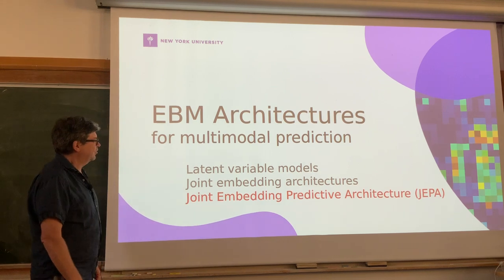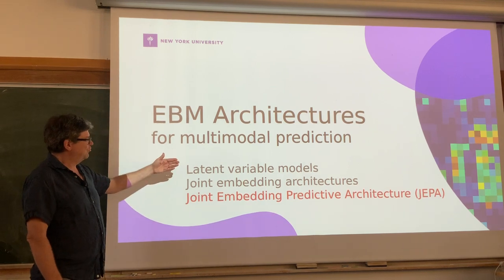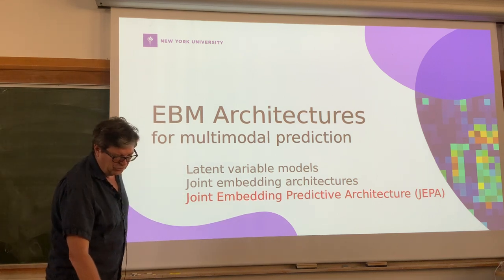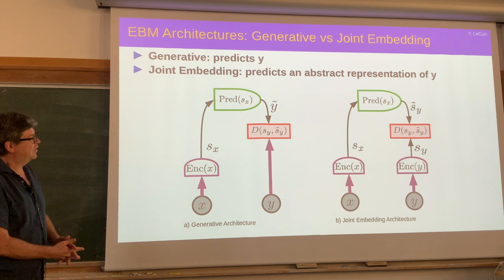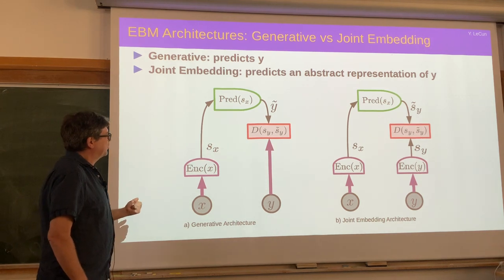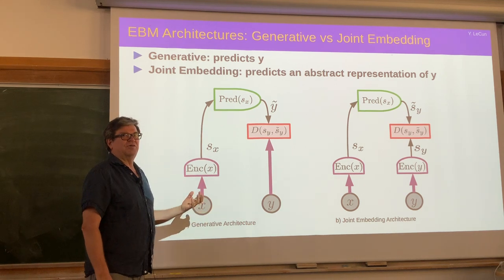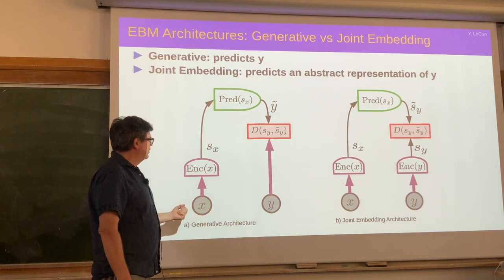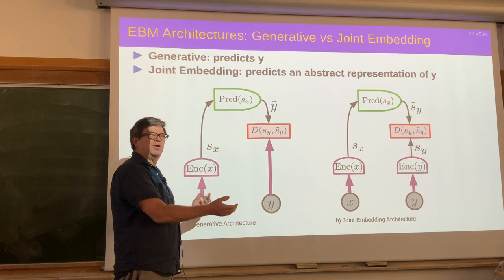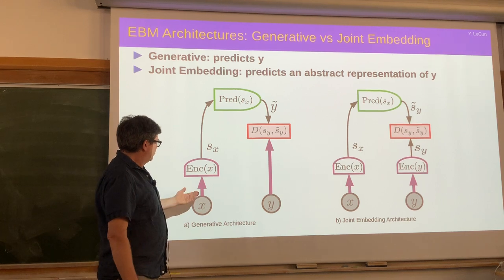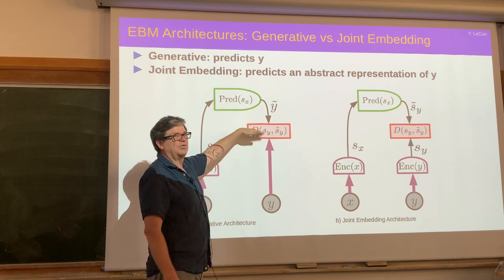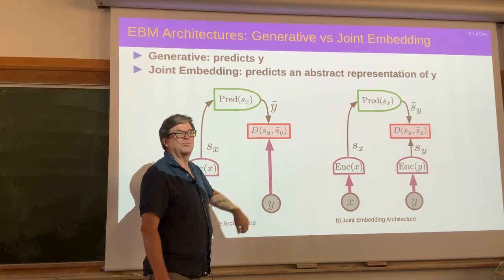Now let's talk about various EBM architectures: latent variable models, joint embedding architectures, and joint embedding predictive architectures, which combine the two. I argued earlier that generative architectures are probably a bad idea, because if you want to predict y from x you can run x through an encoder and predict y, then measure the divergence between the prediction and the observed y. But the problem is that if you apply this to learning from video — learning how the world works by watching videos — you have to model every single detail of the world.